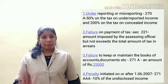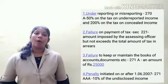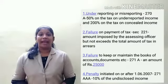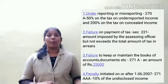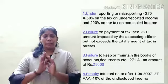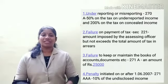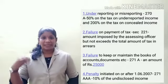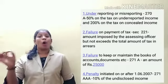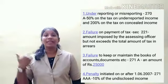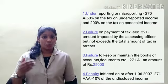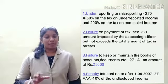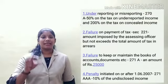The third situation is Failure to Keep or Maintain Books of Accounts, defined under Section 271A. If the assessee fails to keep or maintain books of accounts, documents, or any other documents, the Income Tax Authority may impose a penalty of rupees 25,000 on the particular assessee.